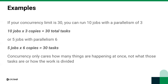Some plans have limits on parallelism, so you may not be able to run parallelism of 6 or 10. But knowing what that limit is will help you set parallelism in a way that runs your jobs as fast as your plan allows.